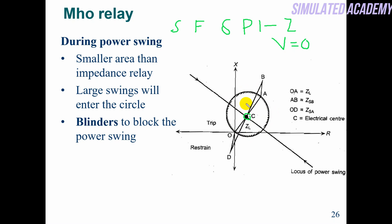So it is clear that there are chances the electrical center may come inside the circle, but this is also a limitation of this relay — the electrical center coming in between. For this, a blinder is used: either reduce the size of the relay circle or use a blinder.